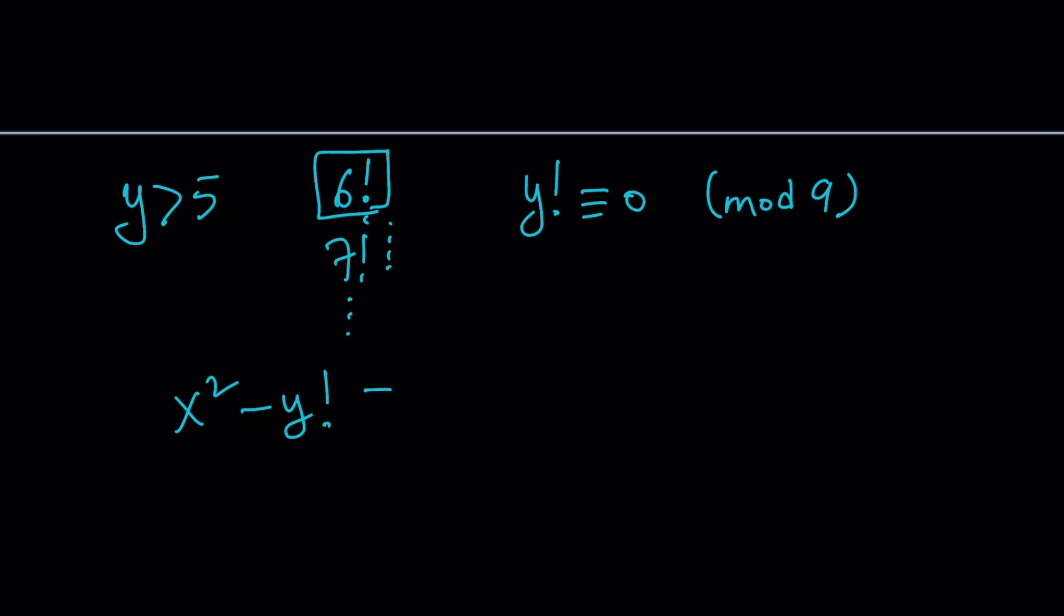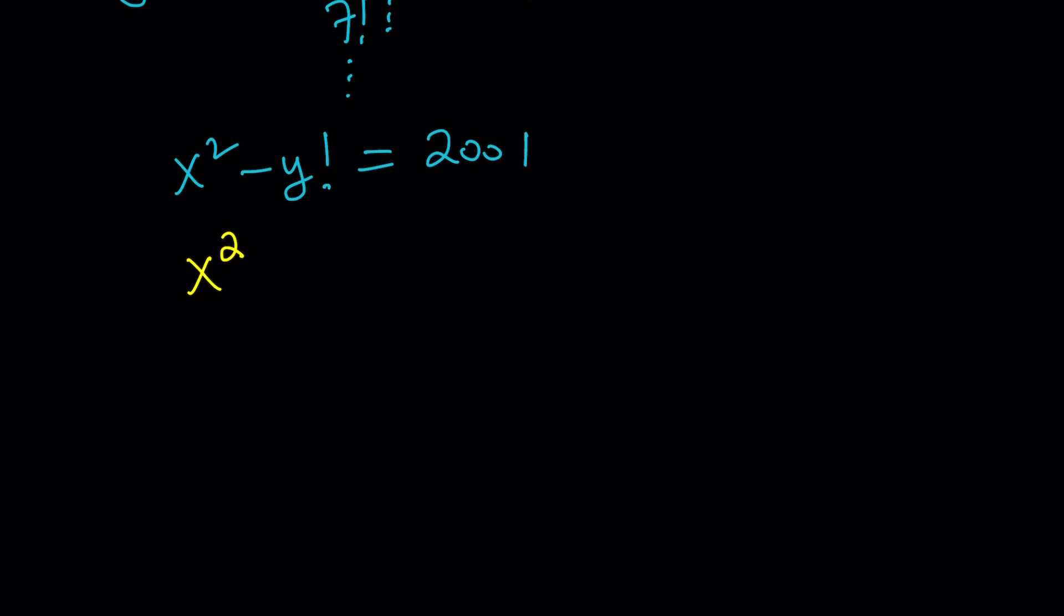How is that going to help us? It's good to be able to get 0, because then you can reduce the equation to a single variable. We had x² - y! = 2001. If you look at this through the mod 9 lens, then you're going to get x² - 0 ≡ 2001 mod 9. And 2001 is going to be what? You add the digits: 2 + 1 = 3. So 2001 ≡ 3 mod 9.